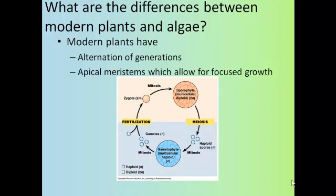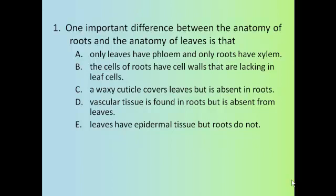Let's try a few practice questions. Question 1: One important difference between the anatomy of roots and the anatomy of leaves is — A) only leaves have phloem and only roots have xylem; B) the roots of cells have cell walls lacking in leaf cells; C) a waxy cuticle covers leaves but is absent in roots; D) vascular tissue is found in roots but absent from leaves; or E) leaves have epidermal tissue but roots do not. The answer is C — a waxy cuticle covers the leaves but is absent in roots. The waxy cuticle prevents water loss, but if you had one around the roots, it would prevent water absorption, which is exactly the opposite of what you want.